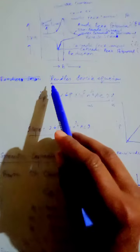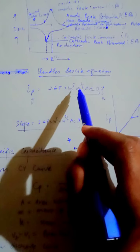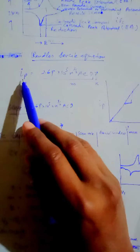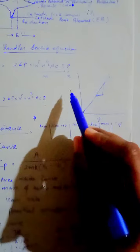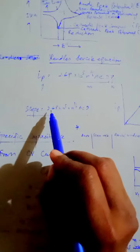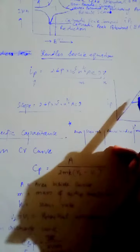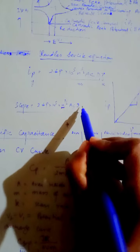اس کے بعد ہم نے Randles-Ševčík equation پڑھی تھی جو یہ ہے: ip = 2.69 × 10⁵ × n^(3/2) × A × C × D^(1/2) × v^(1/2)۔ یہ basically y = mx کی equation ہے جس میں intercept نہیں ہے۔ y-axis پہ ہم ip لیتے ہیں اور v x-axis پہ ہوگا۔ جب ہم graph plot کریں گے تو slope ملے گا جو 2.69 × 10⁵ × n^(3/2) × A × C × D^(1/2) کے برابر ہوگا۔ اگر باقی factors known ہوں تو slope سے n کی value find کر سکتے ہیں۔